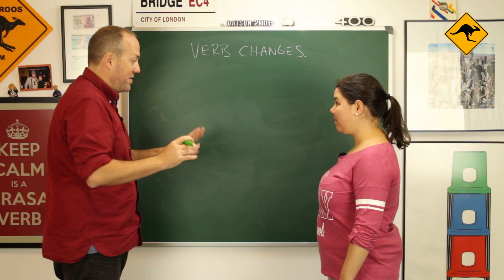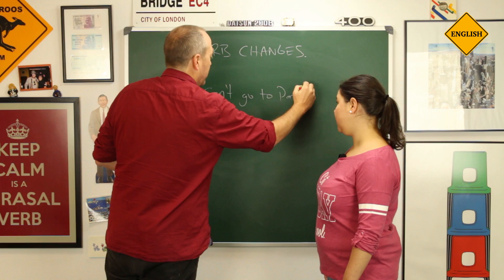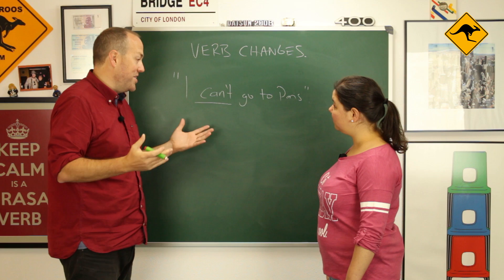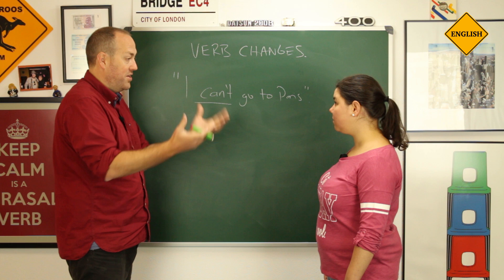Now the most complicated one — what if we use one of the core modals? For example: 'I can't go to Paris.' It's more complicated because it depends on the modal verb — can't, should, must, might, etc. So you need to watch the class about modal verbs.